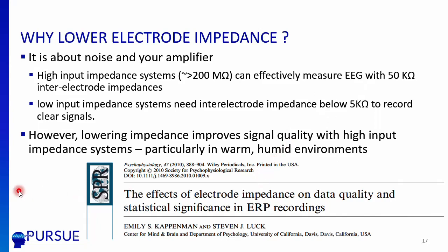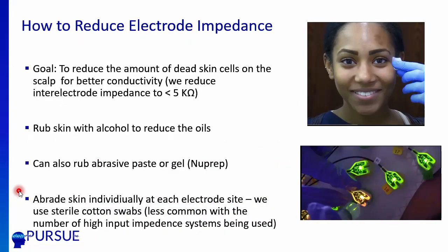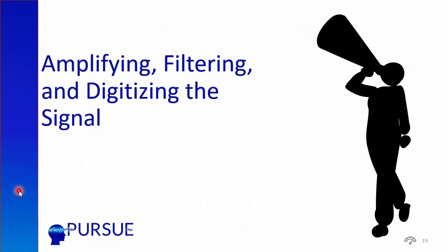How do you reduce electrode impedance? We want to remove the oil and dead skin cells to get below 5 kilohms. One thing you can do is rub or clean the skin with alcohol — we do this for our ocular electrode sites and reference electrode sites, since it's faster and easier. You can remove makeup, oil, and dead skin cells to lower electrode impedance. Then we individually abrade the skin: we take a sterile cotton swab, stick it through the hole, and gently rub on the person's skin to lower impedance.